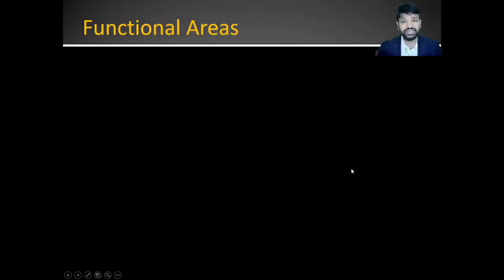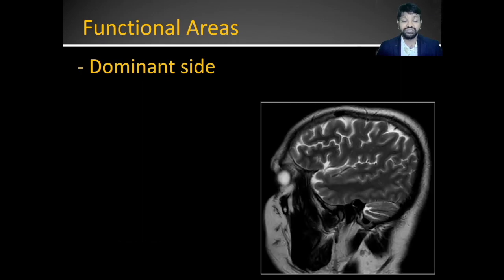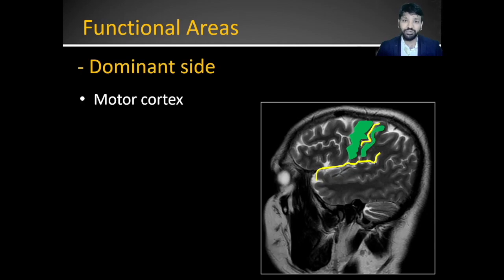Now let's have a look at the functional areas of the brain, which are usually present on the dominant side. Looking at the lateral surface, we have the central sulcus. The precentral gyrus acts as the primary motor cortex and the postcentral gyrus acts as the primary sensory cortex. As you can see, the motor cortex is always thicker than the sensory cortex.